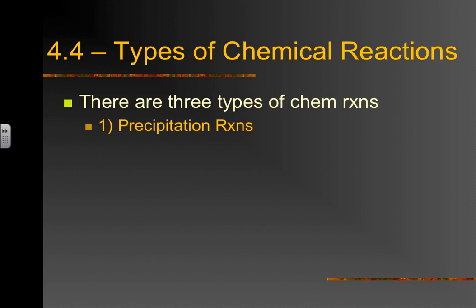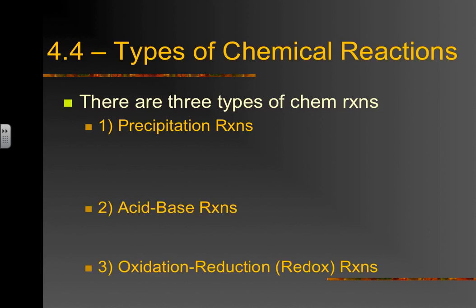In general chemistry you learn those five types of reactions to help predict products — they're not wrong, they just get categorized differently as you move forward. The first type is the precipitation reaction, which we'll be talking about in this presentation. There are also acid-base reactions and oxidation-reduction reactions — sometimes shortened to 'redox.' Each of these specifies a different type of chemical reaction.